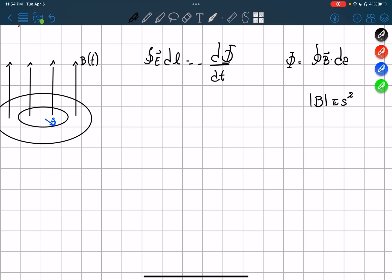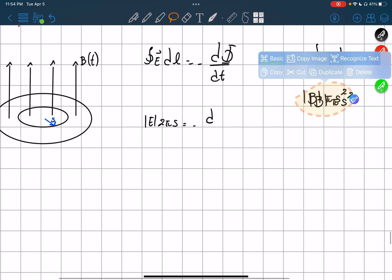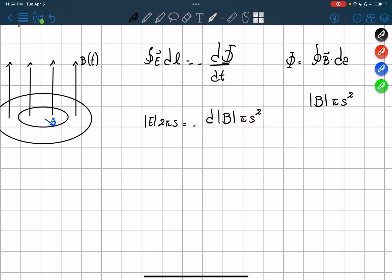And then the E over the l, the integral over closed loop would be E and then 2 pi s. So it equals negative the derivative of flux, which is equal to this, over dt.